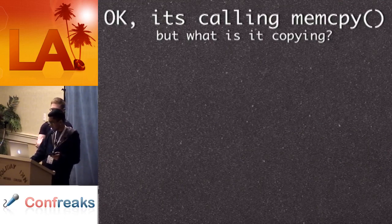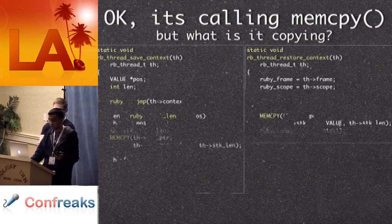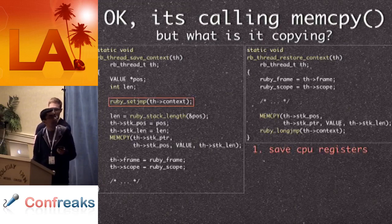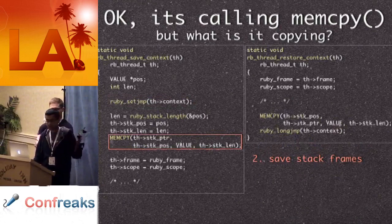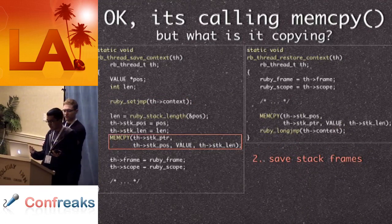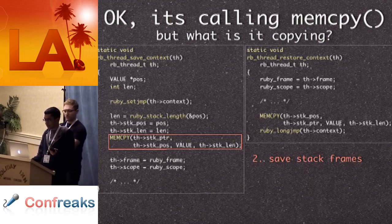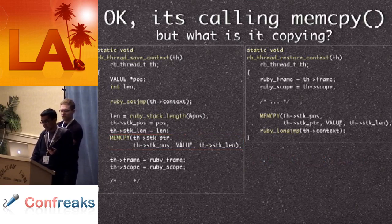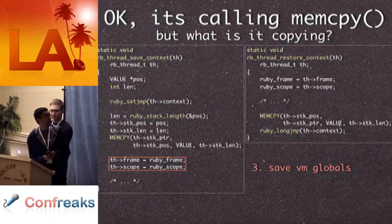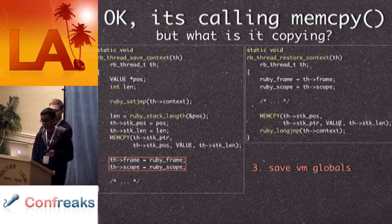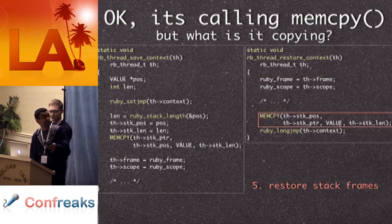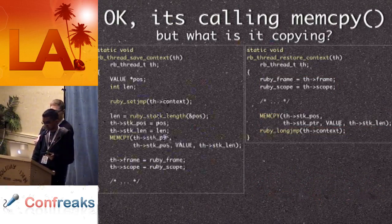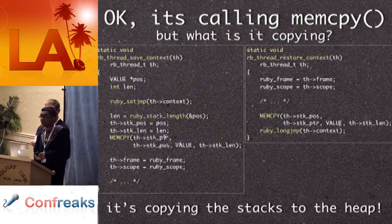We know it's calling memcpy, but the question was: what is it copying and why so much? We know it's getting called from thread_save_context and thread_restore_context, so we pulled up the C code. The first thing save_context does is call setjmp, which saves the CPU state. Then it calls memcpy, accessing the thread stack pointer and stack position — it's actually copying the entire stack associated with that thread. All the stack frames in that thread are getting copied away. Then it saves a bunch of VM globals into the thread structure. In restore_context, it does the same in reverse: restores all the globals, memcopies the stack back, then longjmps to the saved CPU state.